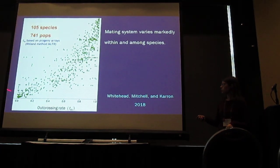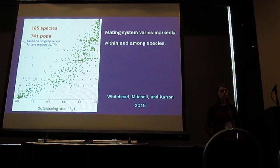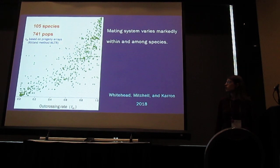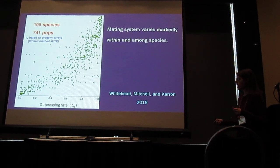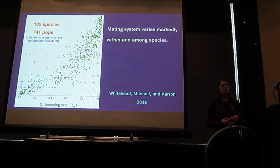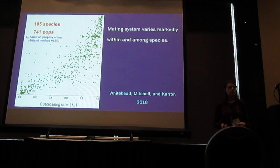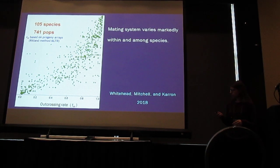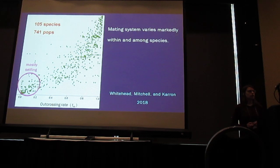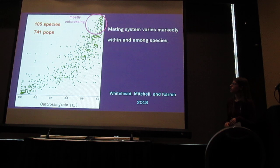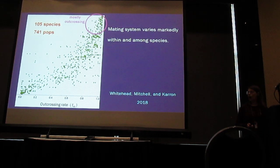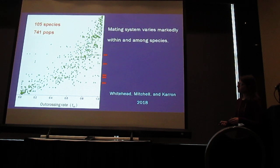This figure shows the among-population variation in mating system for 741 populations of 105 species. The x-axis is outcrossing rate, based on progeny arrays using Ritlin's MLTR. Each line on the graph is a species, and each point on a line represents a population within that species. Species at one end primarily self-fertilize, while species at the other end primarily outcross, and several species show striking variation ranging from predominantly selfing to nearly exclusive outcrossing.